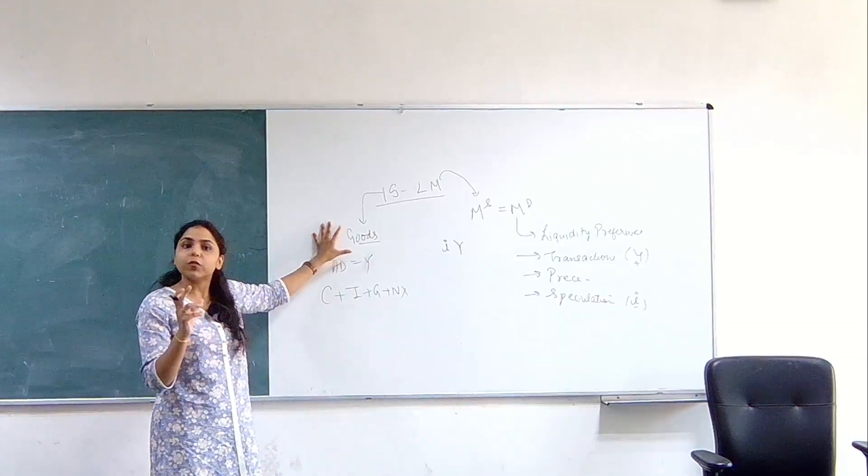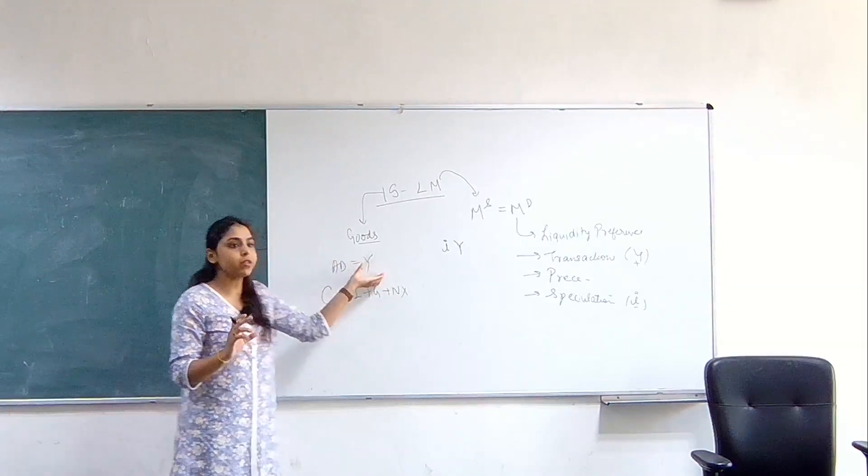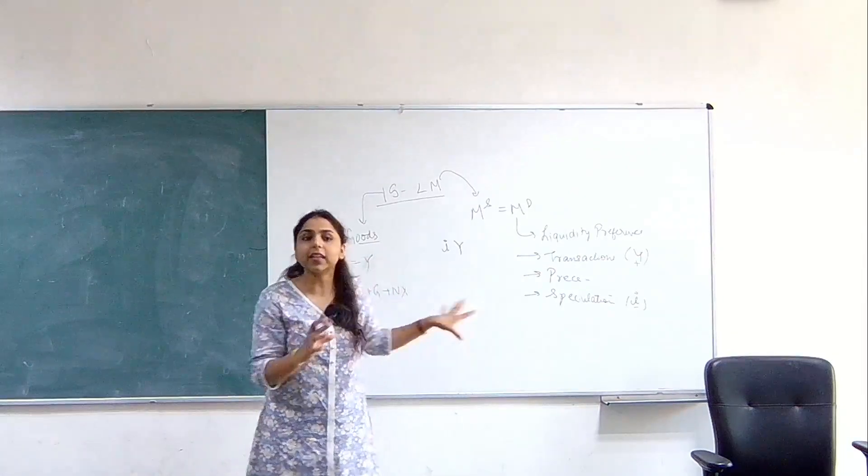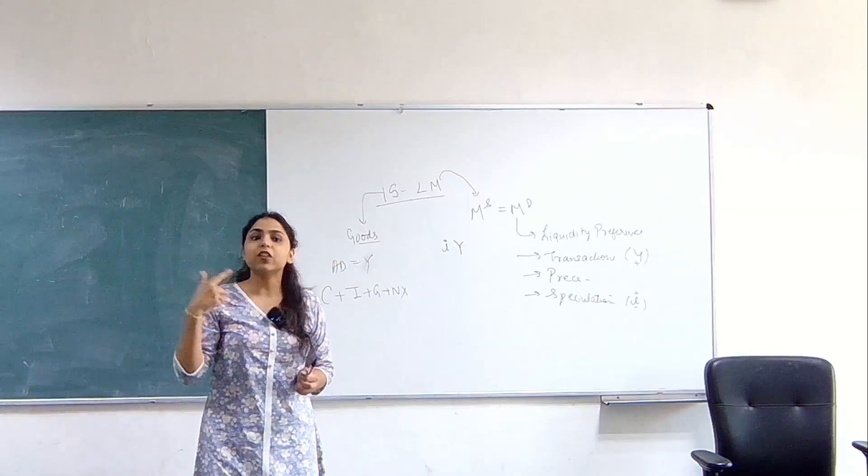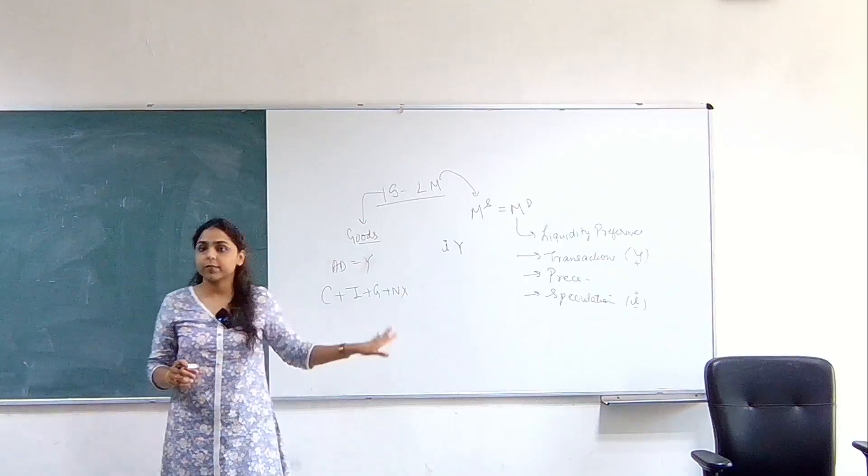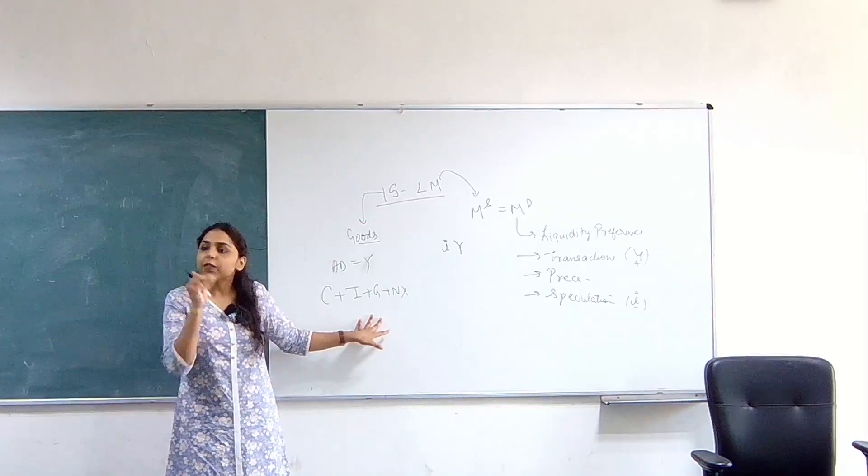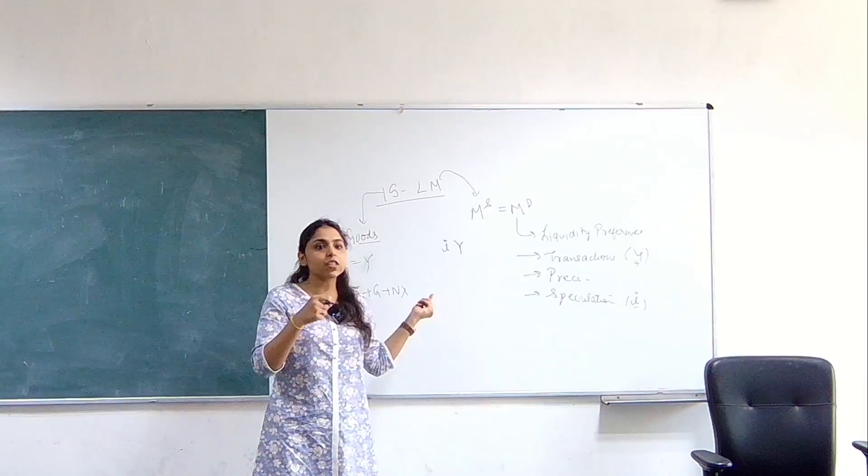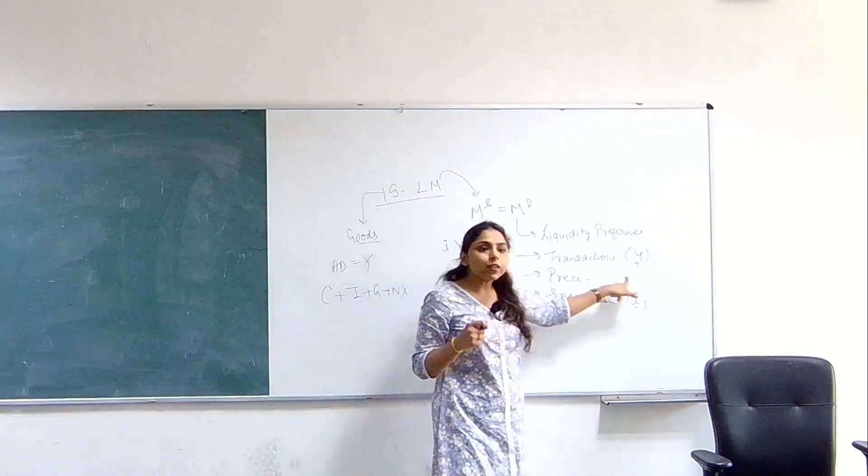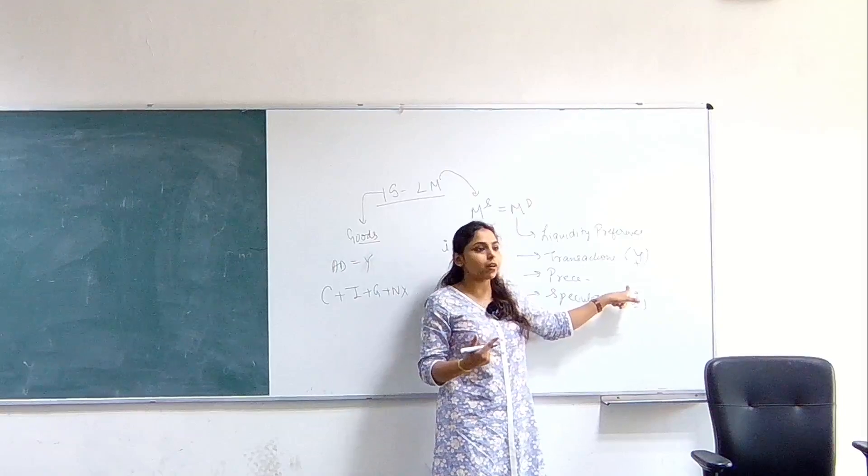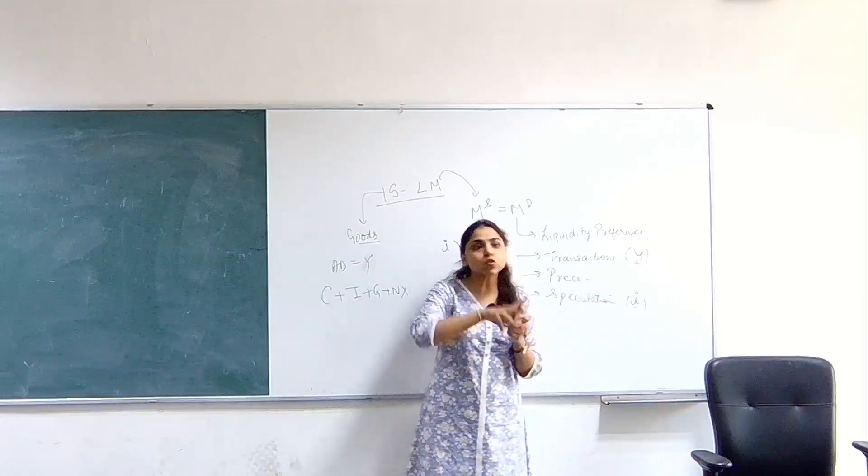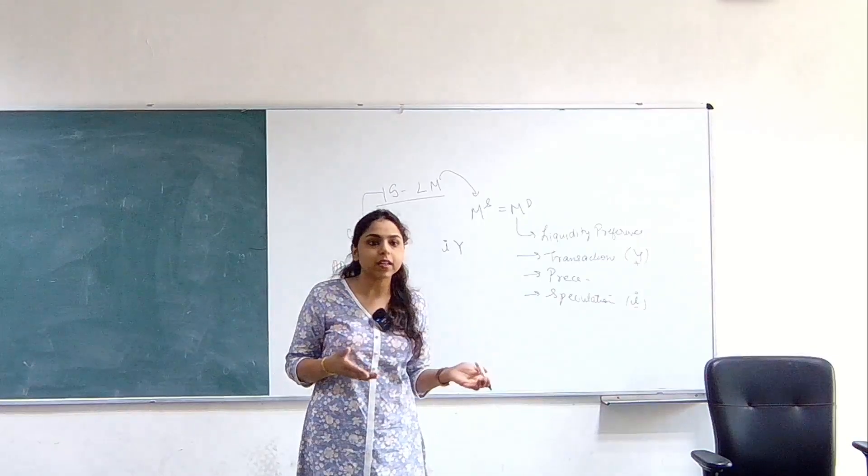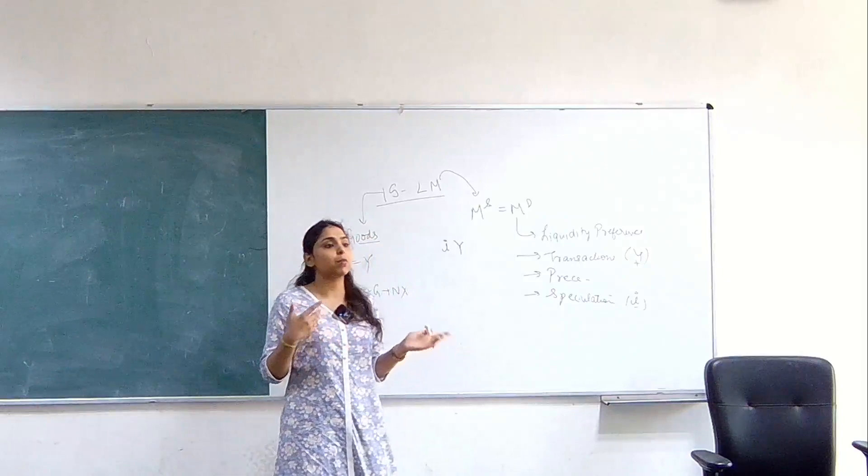We know that we are going to determine income in the goods market. Is interest rate dependent on, is interest rate coming in this goods market? What will change if the interest rate is changing here? Which factor will change if the interest rate changes? Investment. When the investment changes, income would change. What will change here when the income changes? Money demand. Money supply being constant, these two concepts are interrelated to each other. Goods market will have certain components which will impact the money market, and the money market will have certain components which will impact the goods market.